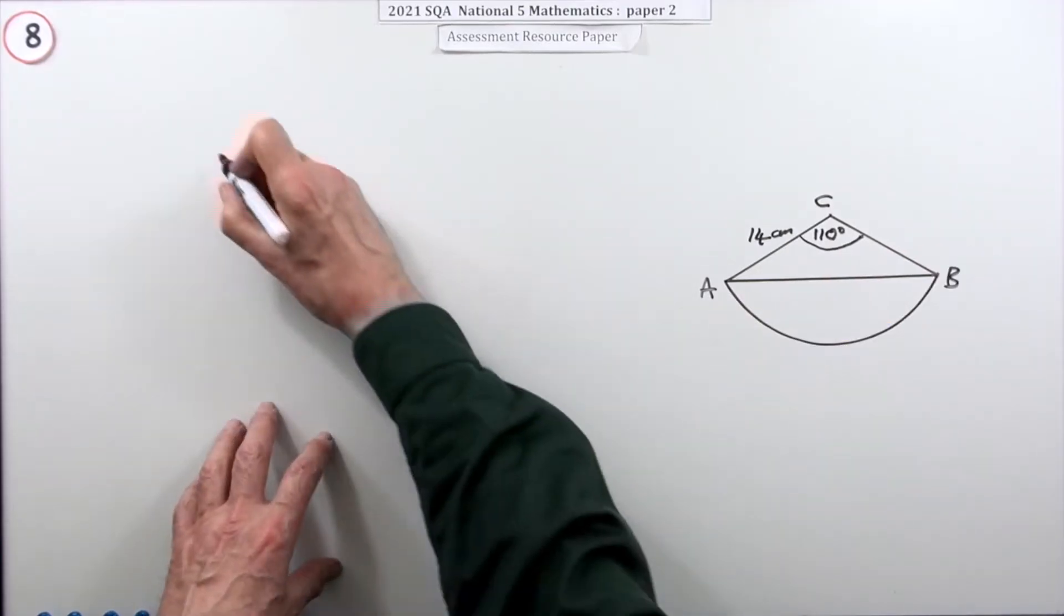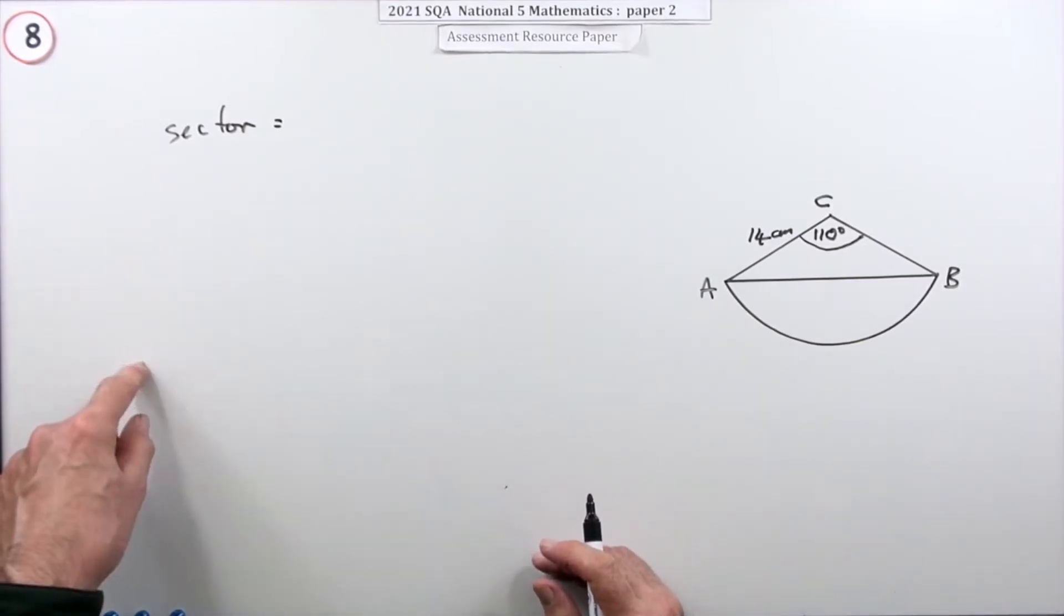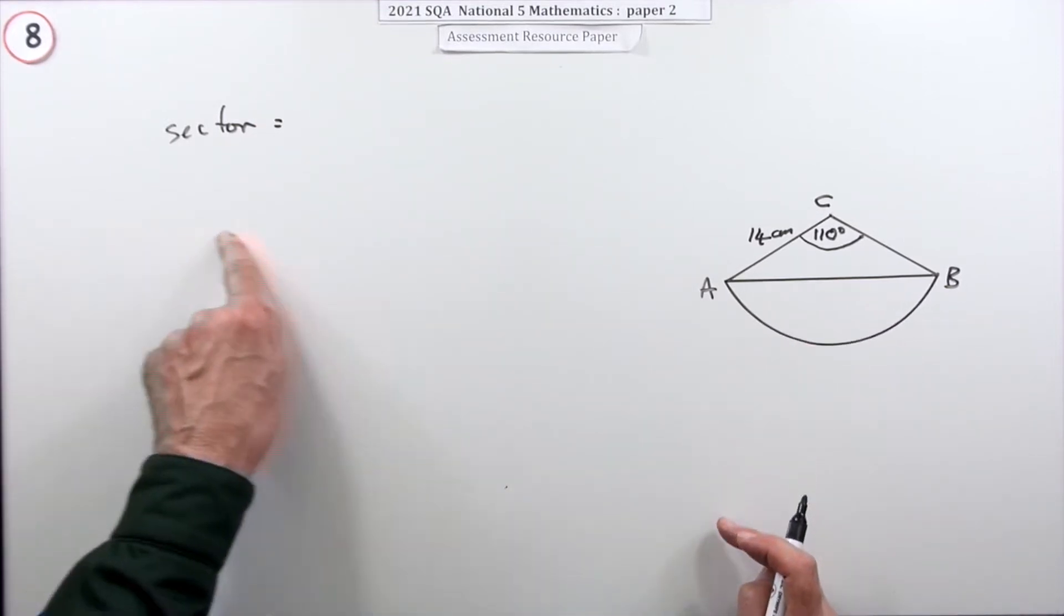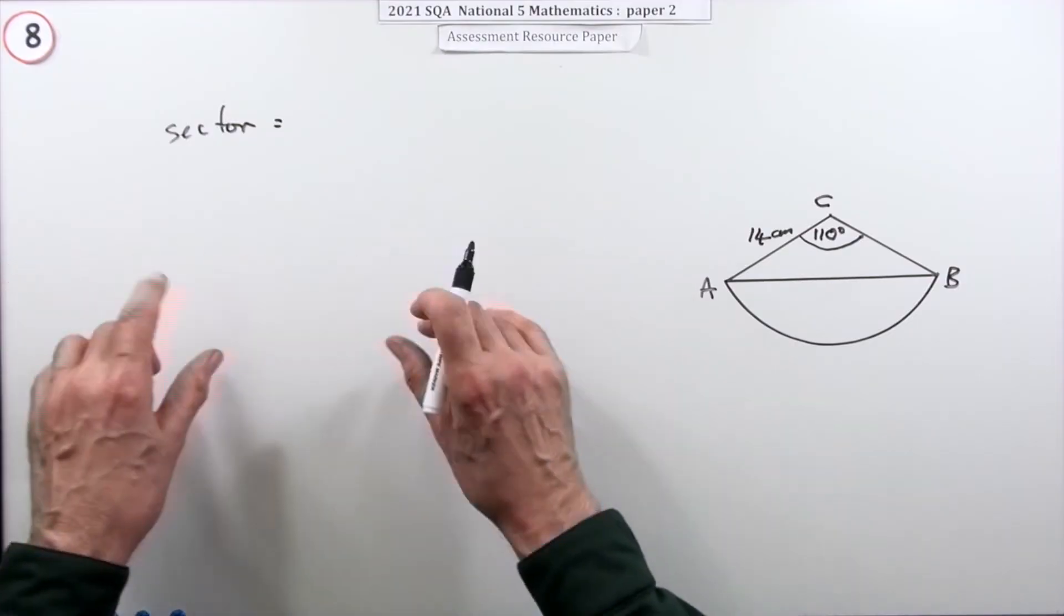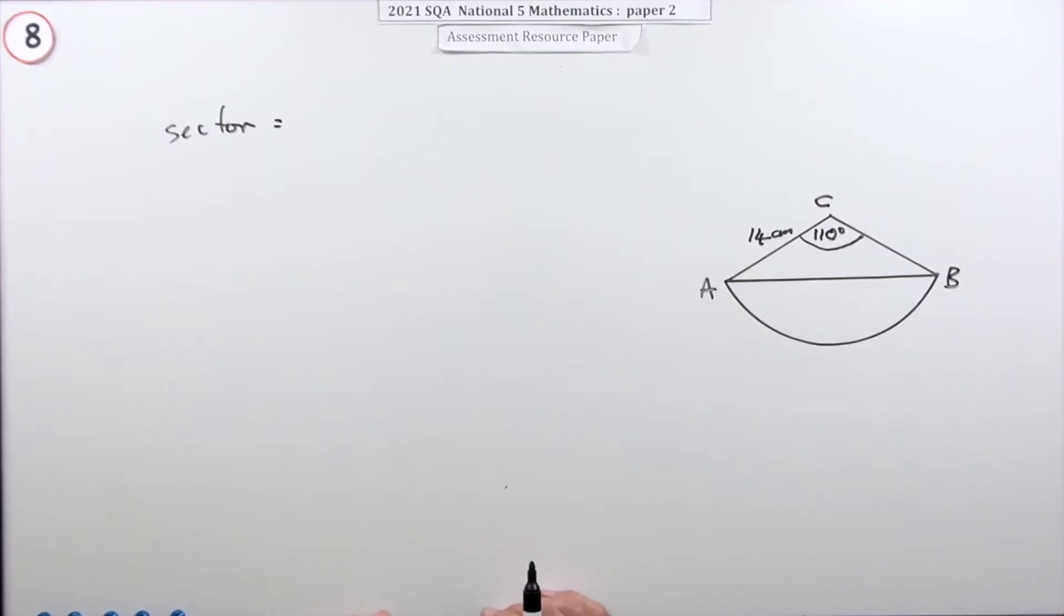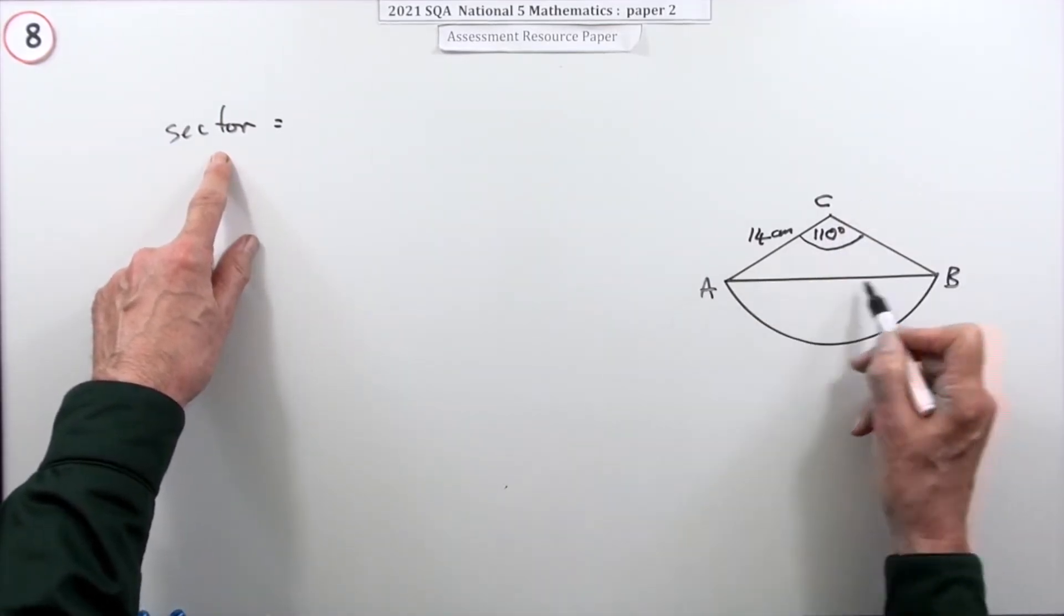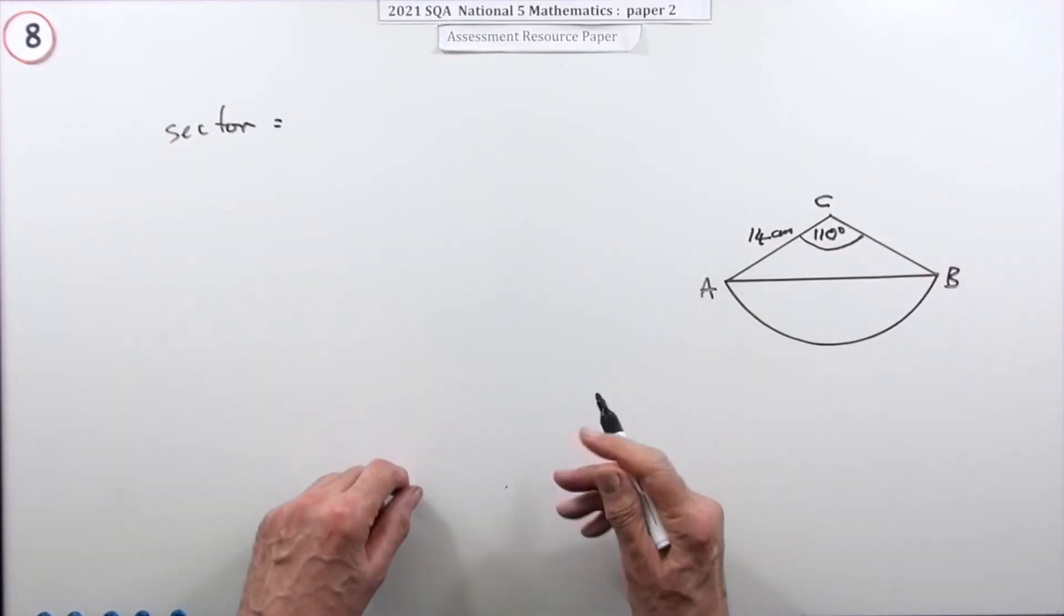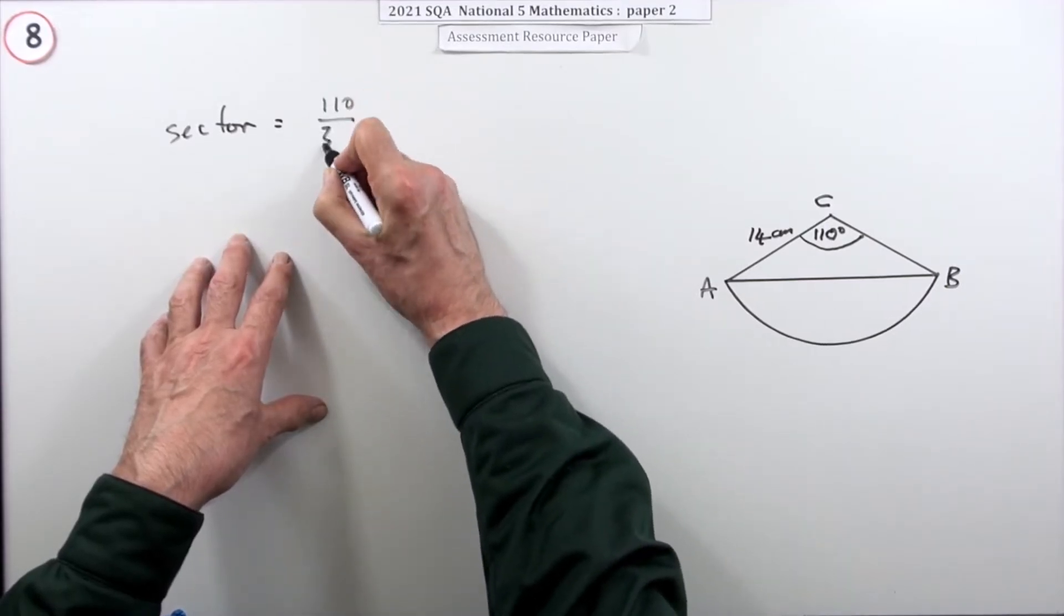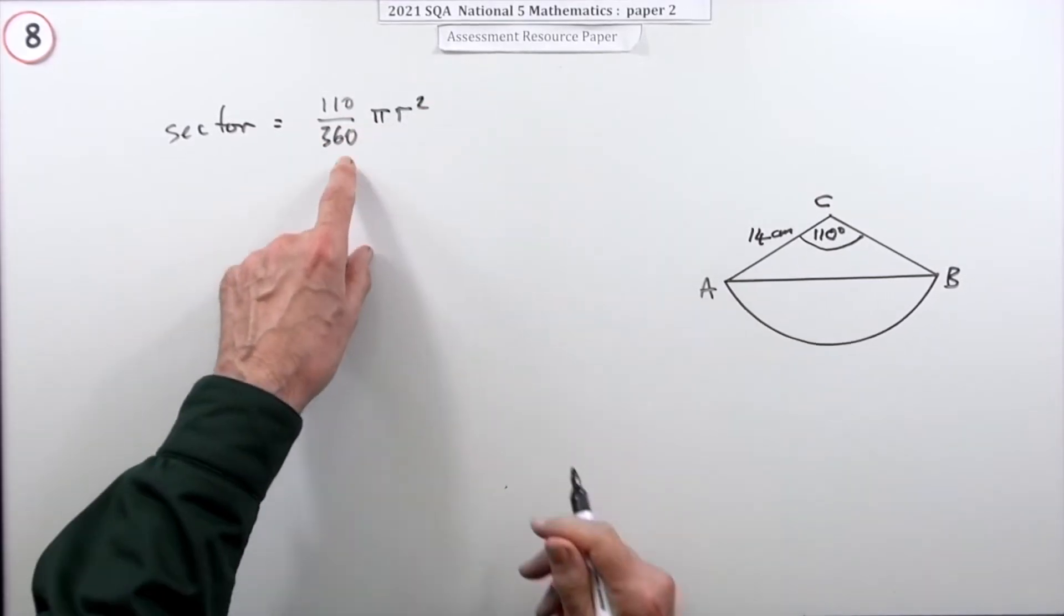Get the sector first. You could find the answer in one line to keep it completely accurate, but I'm going to do it in two parts. So the sector first - that's a slice out of a circle. How big a slice? You've got 110 out of 360 degrees, so that fraction of pi r squared.